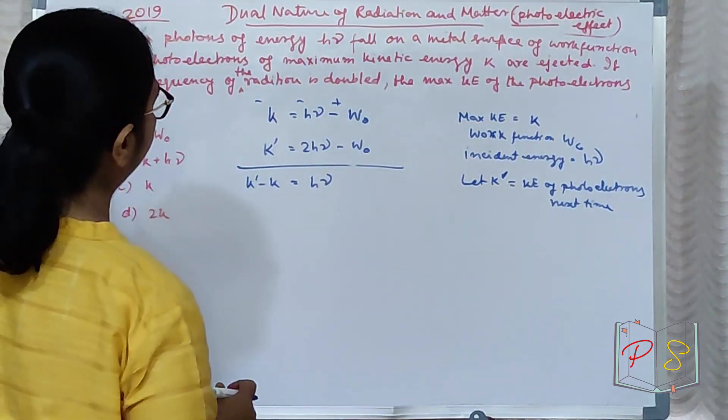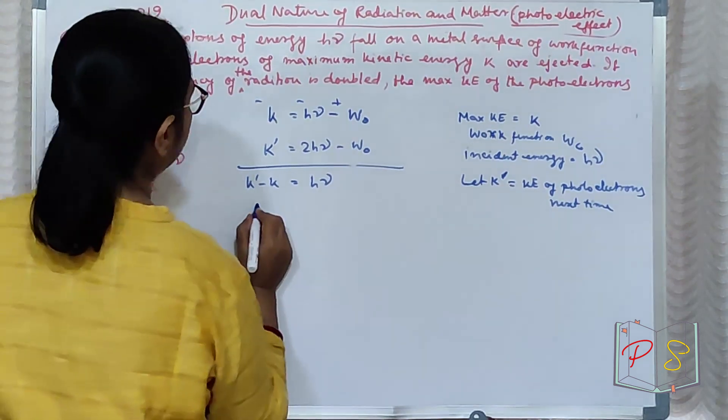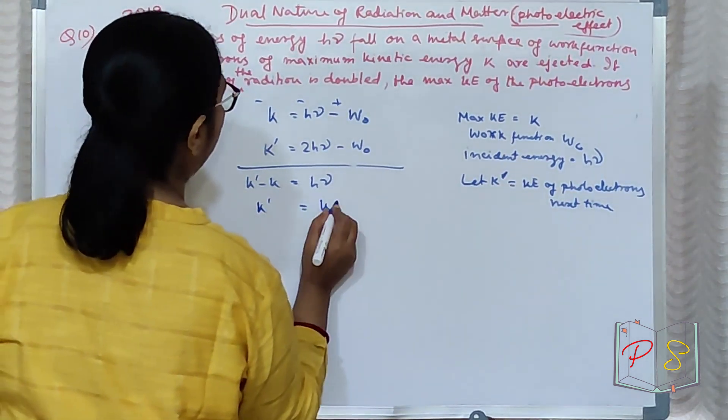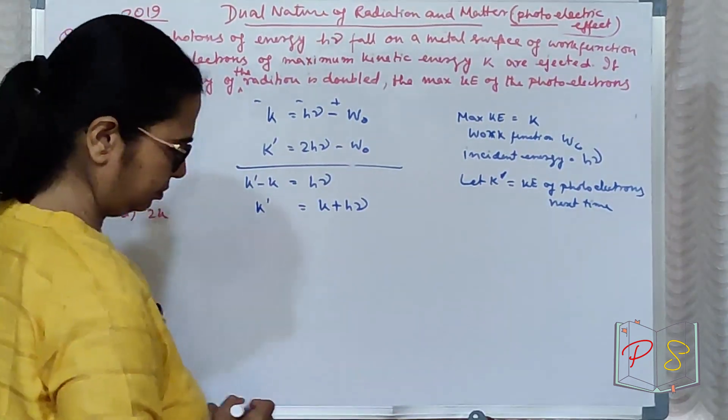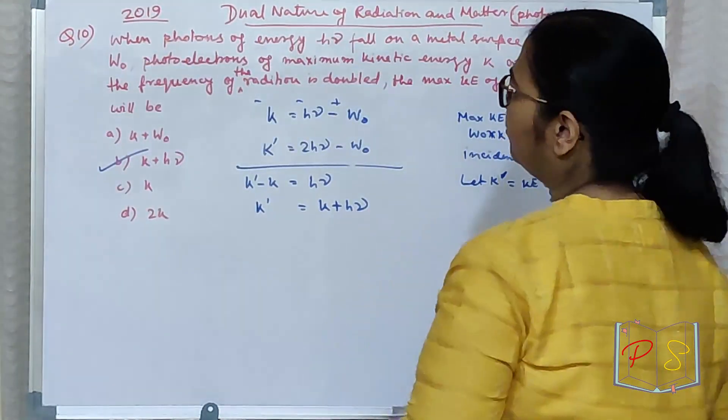W, W cut ho gaya. To K' kitna ho gaya? K plus hν. K plus hν. Very easy question.